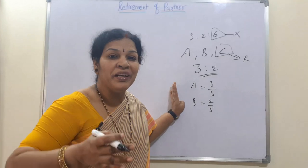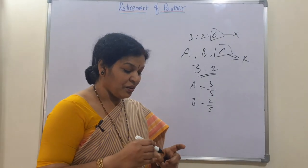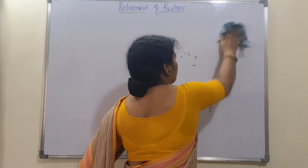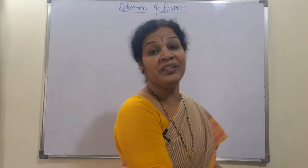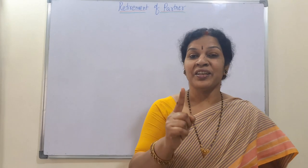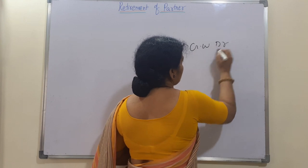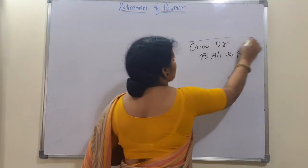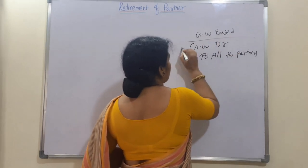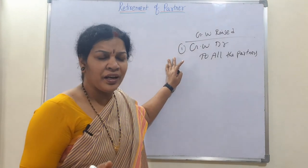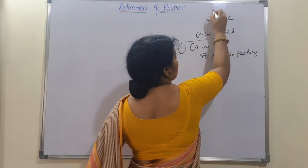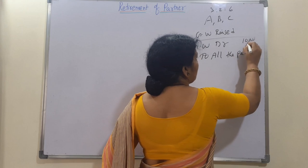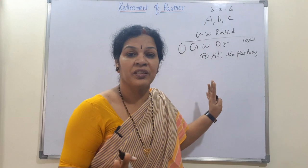That is the new profit ratio of the remaining partners. Next, we go for the treatment of goodwill. Remember: when goodwill is raised, we debit the goodwill account and credit all the partners. For example, if A, B, C are partners sharing in ratio 3:2:6 and goodwill is raised at 10,000, we distribute it to all partners A, B, C in the ratio of 3:2:6.